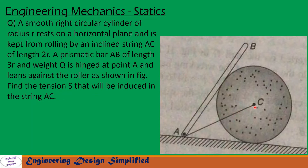In this problem, given is a right circular cylinder of radius R resting on a horizontal plane, and a string AC of length 2R is attached as shown. A prismatic bar AB of length 3R is hinged at A and resting on this roller. We need to find the tension in the string AC. Let us see in the coming slides how to solve this problem.